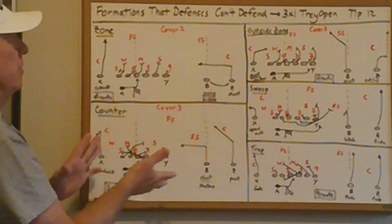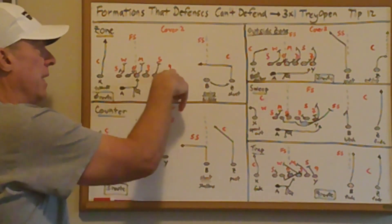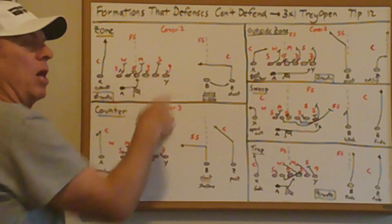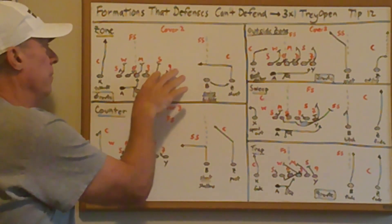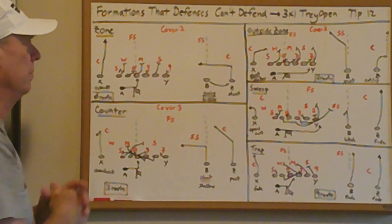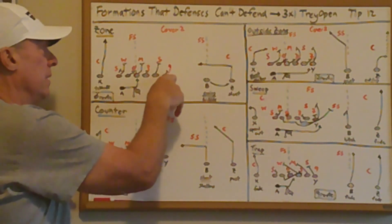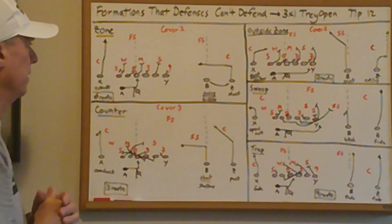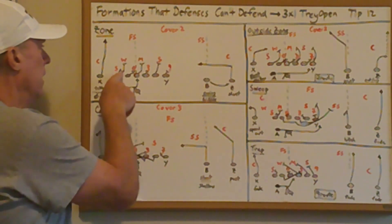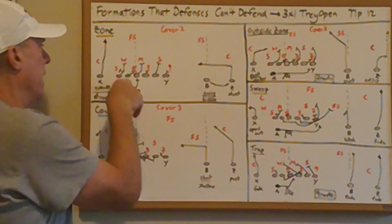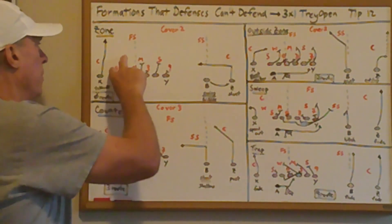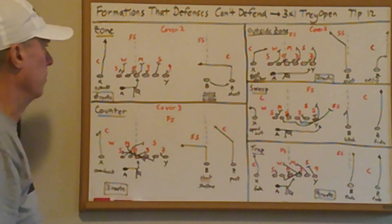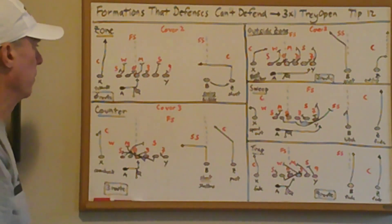The advantage of having the tight end in inside zone is that the backside defensive end has someone to block him, preventing him from crashing backside. Without the tight end, you'd have a 5-technique to block. The 5-technique on the frontside either has to play the running back or the quarterback on inside zone, so on the backside those two defenders' responsibilities become clear when the run is executed.